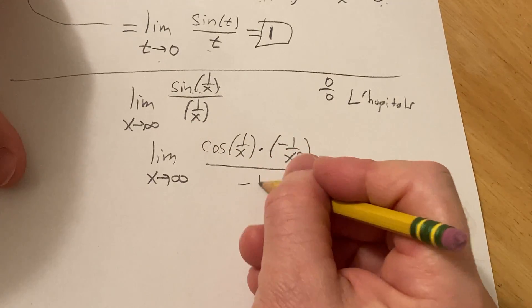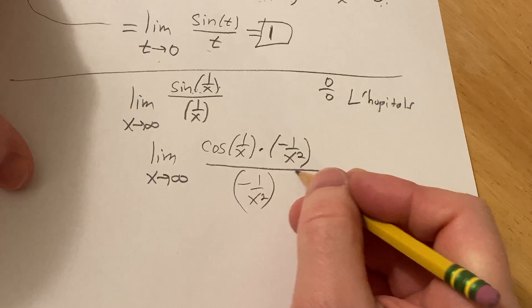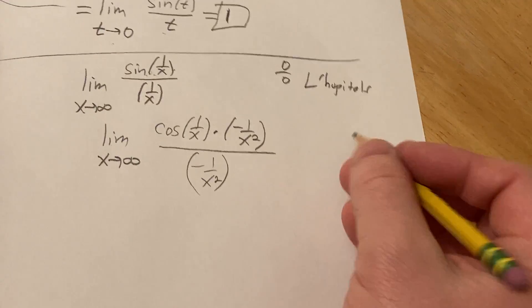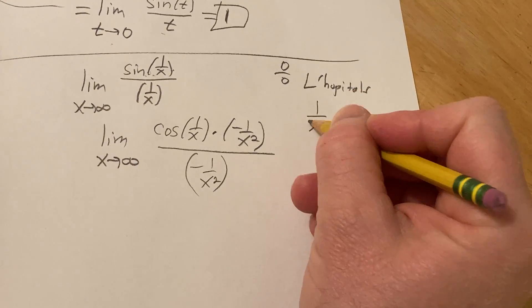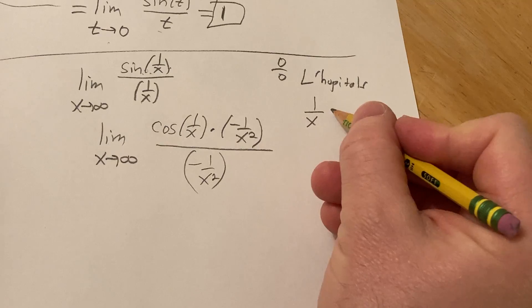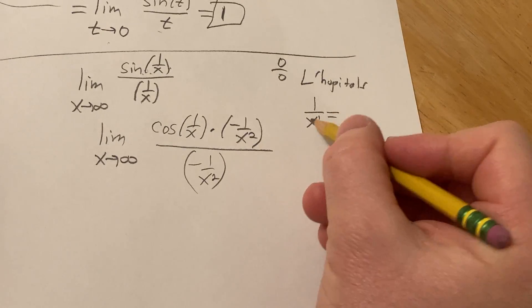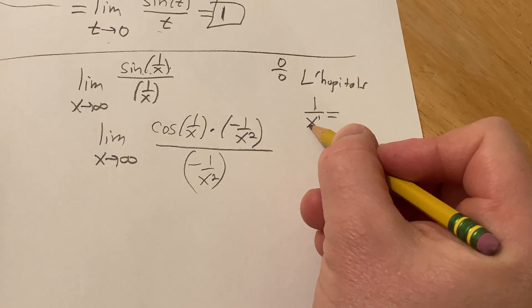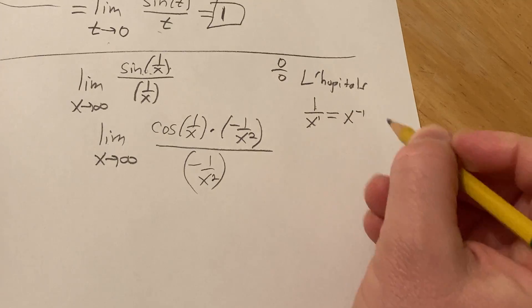And here on the bottom, the derivative is negative 1 over x squared. The derivative of 1 over x is something you end up memorizing. If you want to work it out, you can realize it's really x to the negative 1. Then you can bring this upstairs and write it like this.